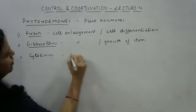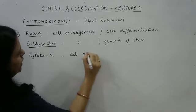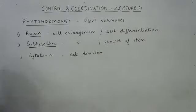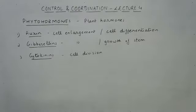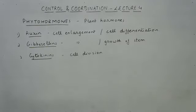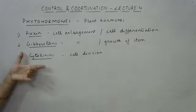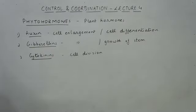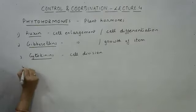The third category is cytokinins, whose function is to regulate or promote cell division. Cytokinins are found in those parts of the plant where rapid cell division takes place — like in fruits and seeds, because fruits grow very rapidly, as do seeds. Cytokinins basically increase the rate of cell division and are present in the fruits and seeds of the plant.